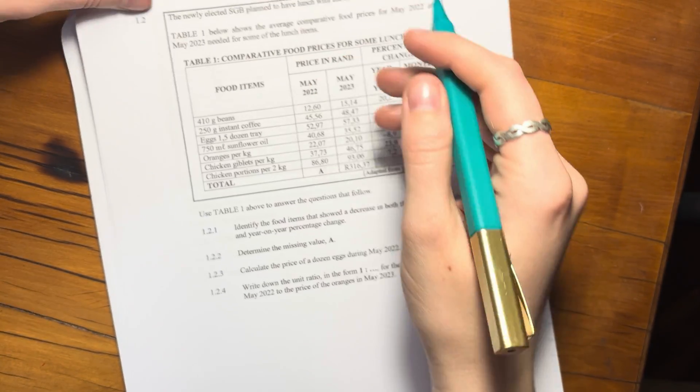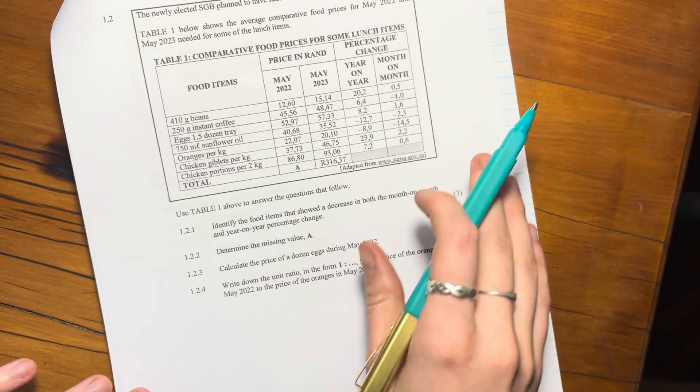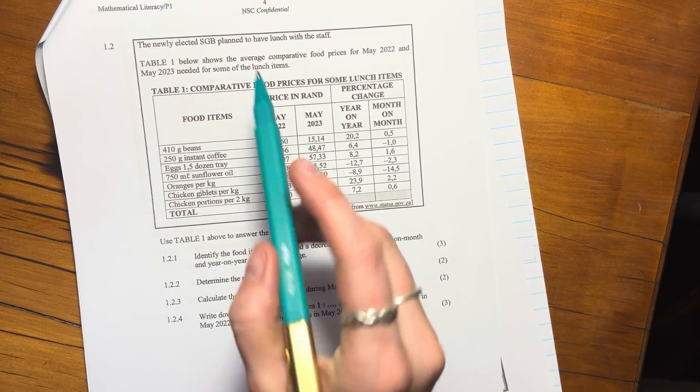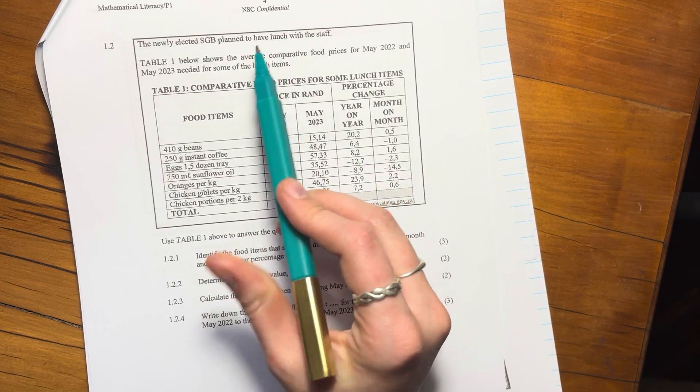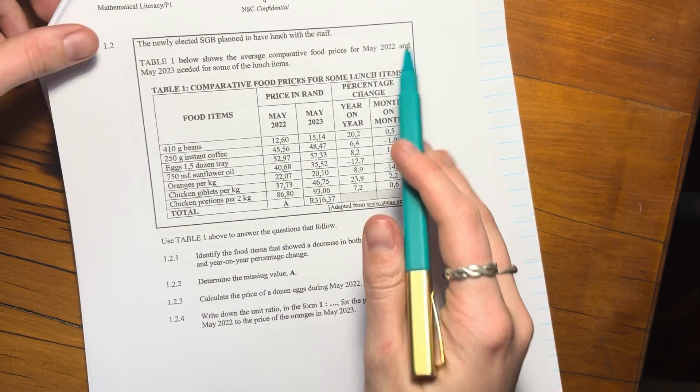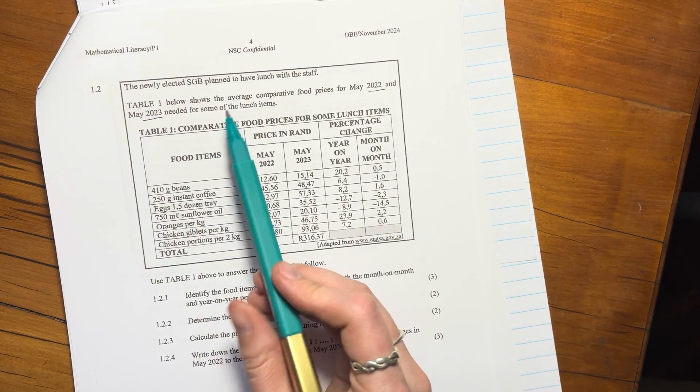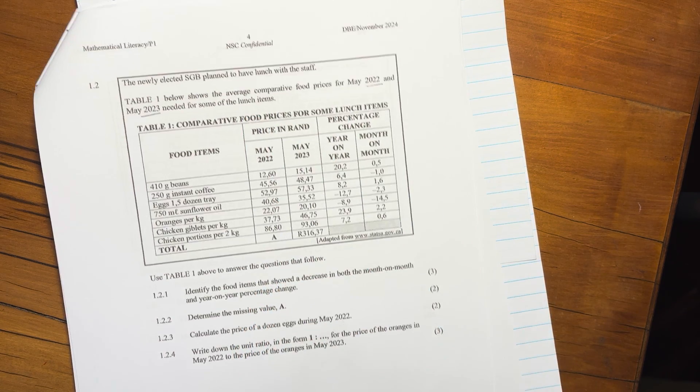Let's do 1.2. So 1.2 says the newly elected SGB, so that's a school governing board from the previous question, plan to have a lunch with the staff.